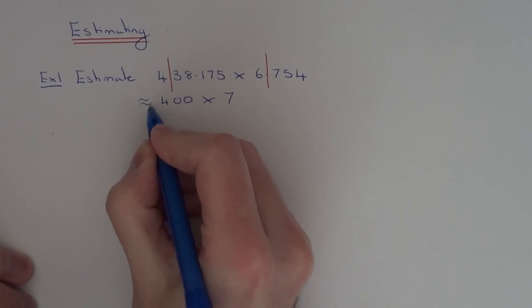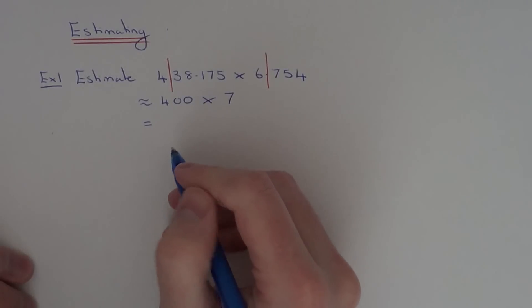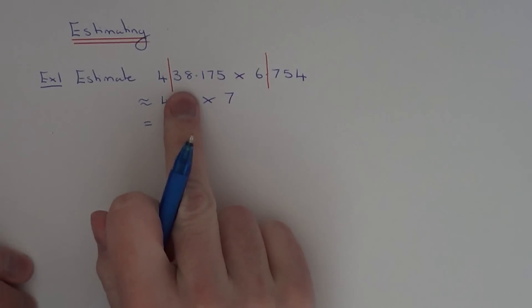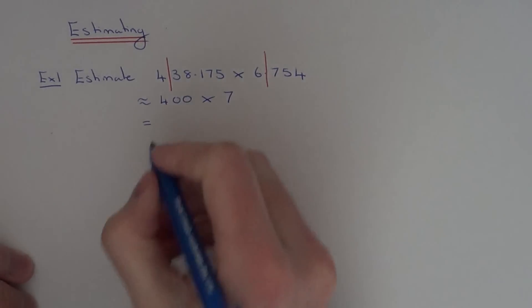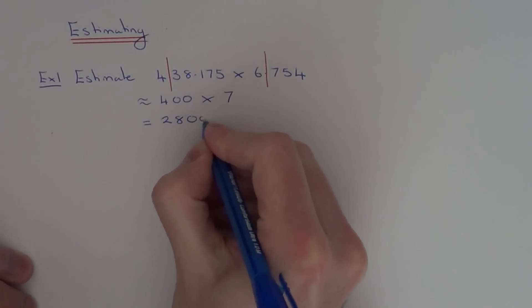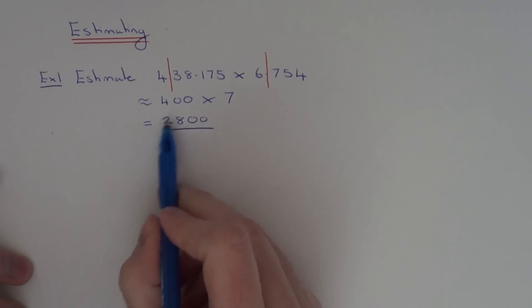So all we need to do now is work out 400 multiplied by 7. So if you ignore the zeros, just work out 4 times 7 which is 28. And then add the two zeros back on. So we get the answer 2800.